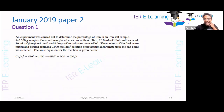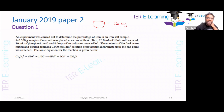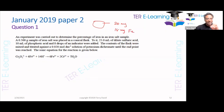An experiment was carried out to determine the percentage of iron in an iron salt. What that means is that sometimes you go to the pharmacy and you buy an iron tablet. The tablet might be, say, 20 milligrams — it might be labeled a 20 milligram iron tablet, but it is not actually 20 milligrams of iron inside it. It might be 18 milligrams of actual iron inside it. So this experiment is to determine the percentage of iron in a sample of an iron salt.